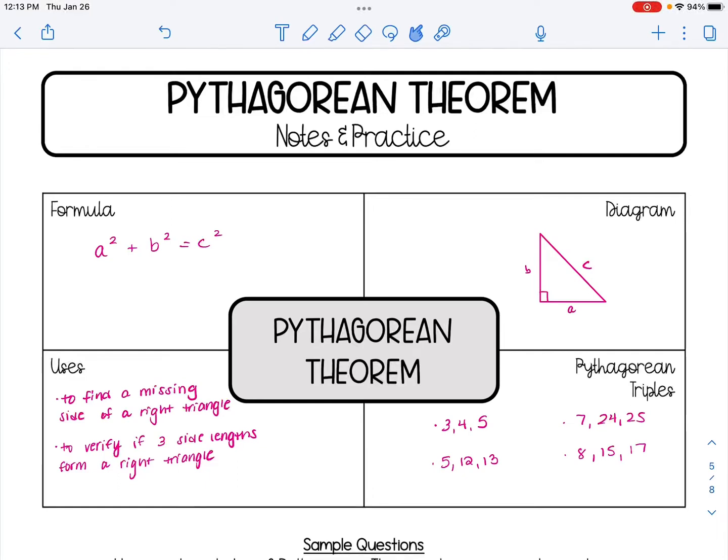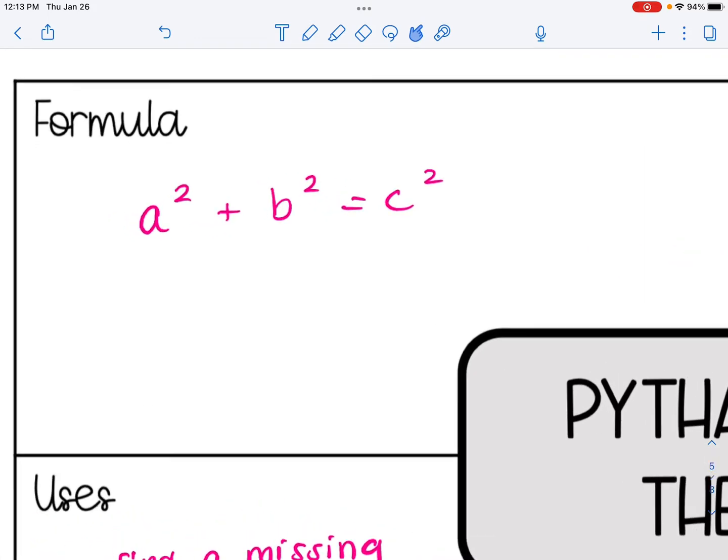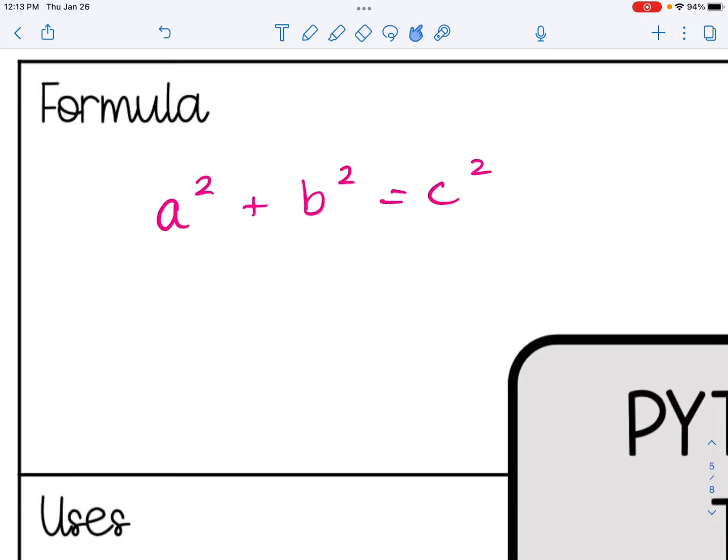In this video, we are going to learn about the Pythagorean Theorem. The formula for the Pythagorean Theorem is A squared plus B squared equals C squared. A and B represent the legs of a right triangle, and C represents the hypotenuse, which is the side that is across from the right angle.